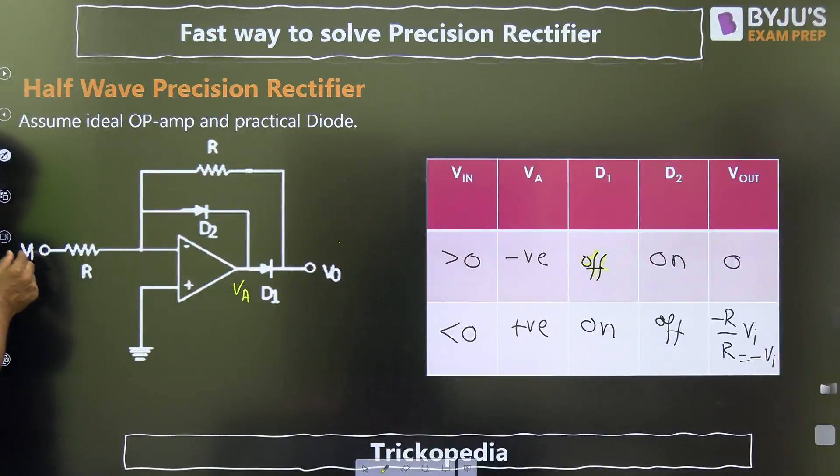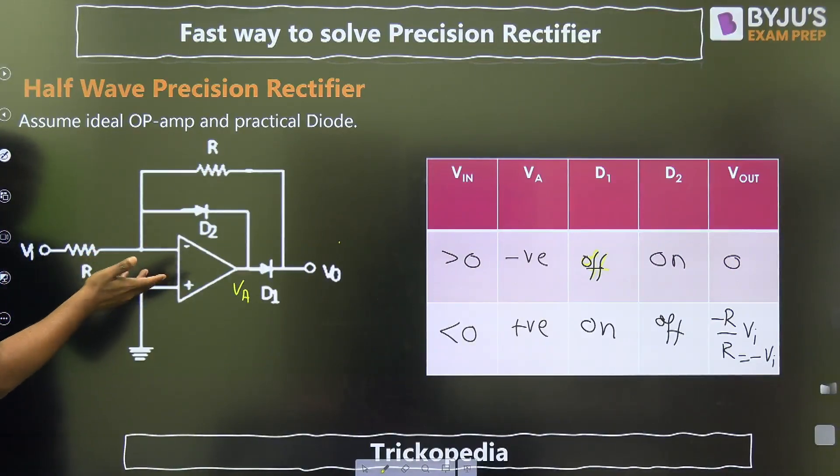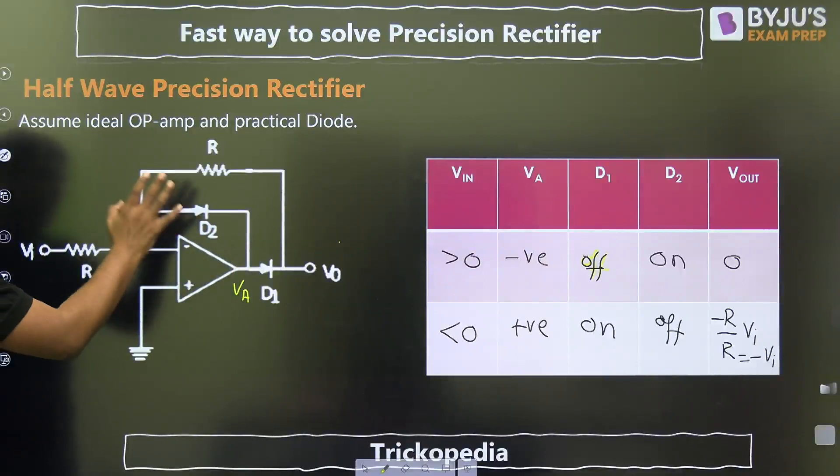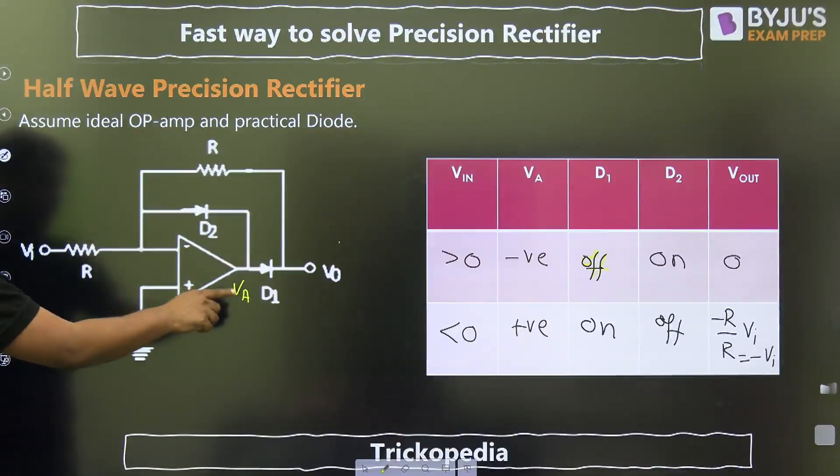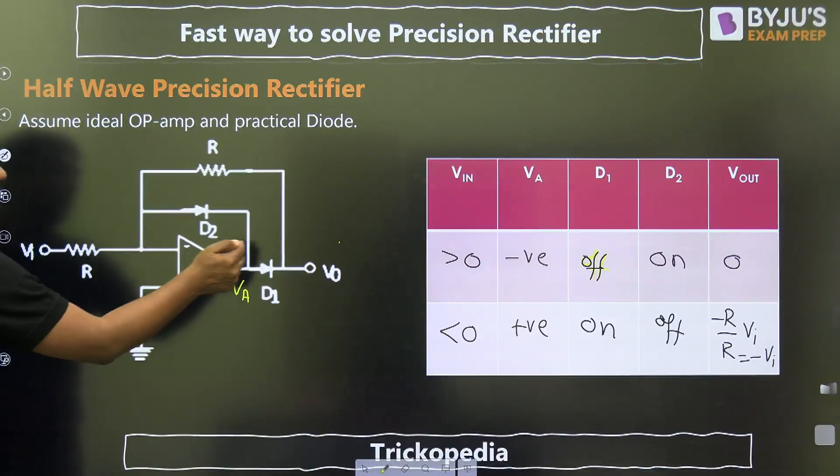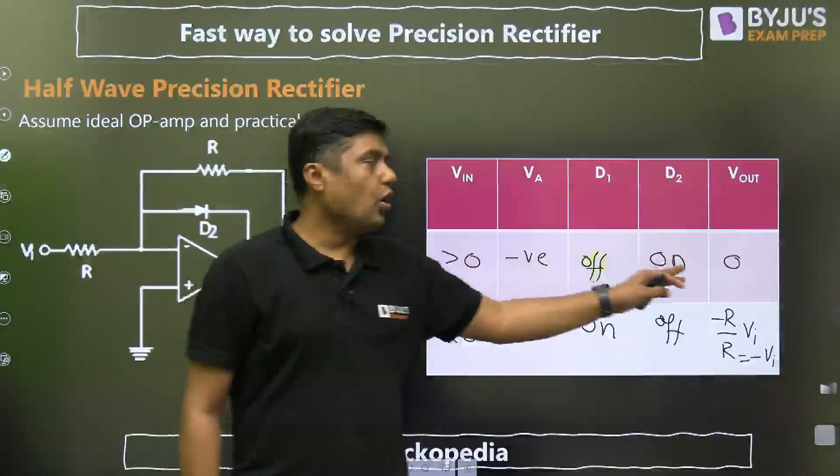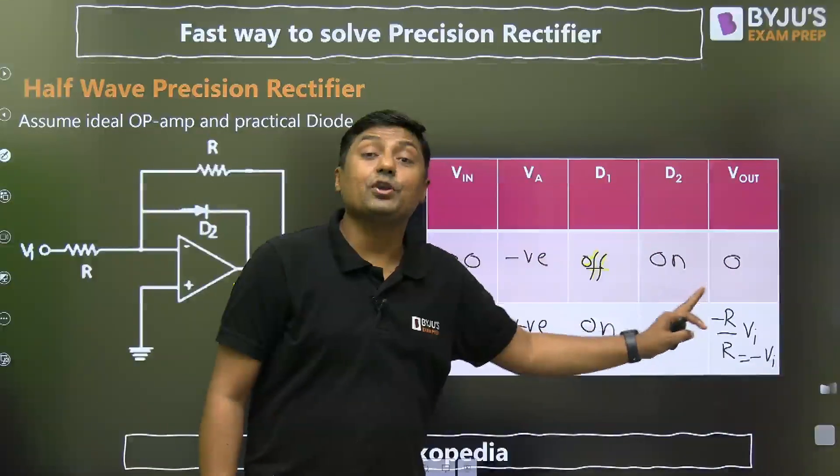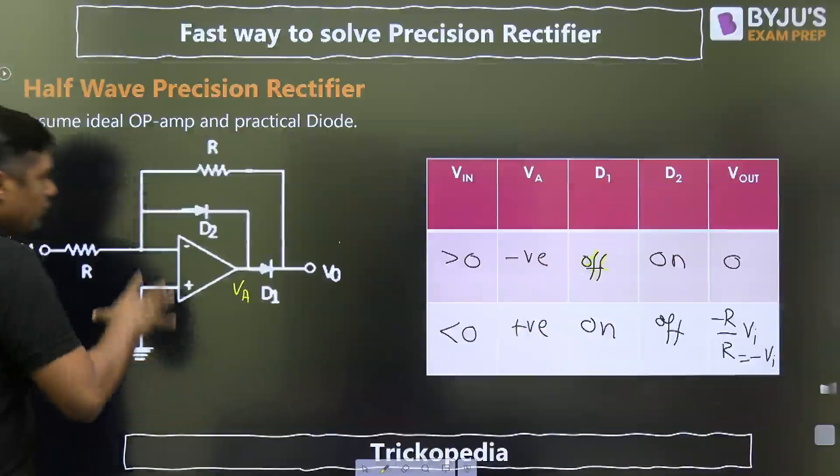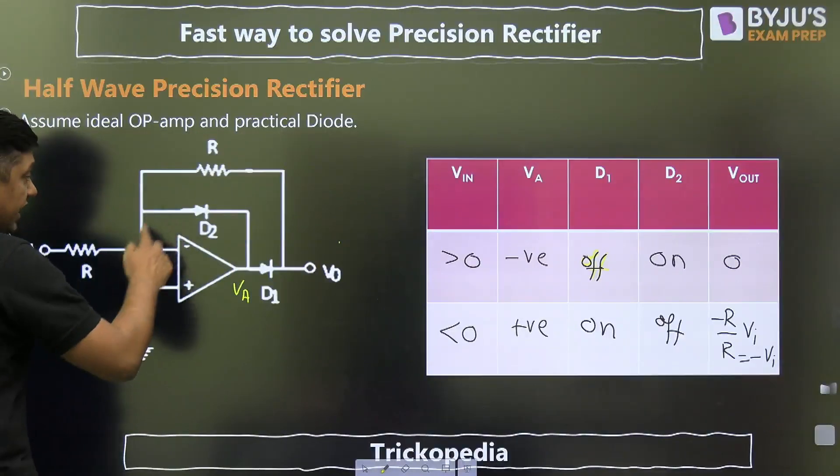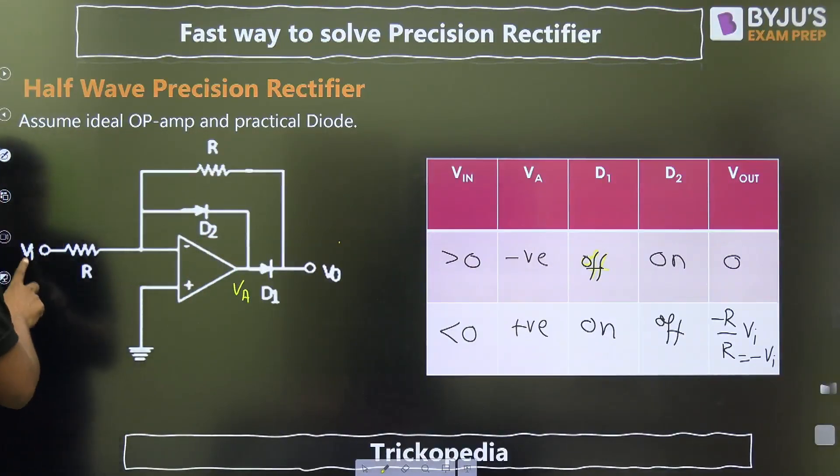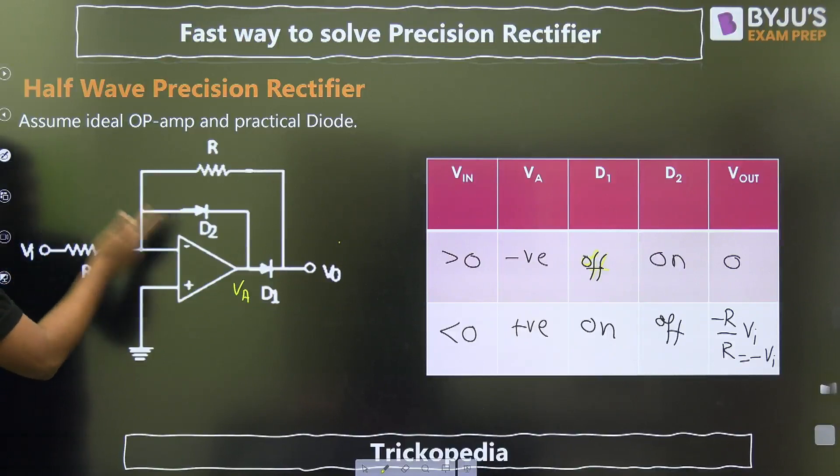When we are giving the positive voltage at this point, that is greater than 0, both the diodes are practical diodes. Op-amp is ideal. VA becomes negative. D1 off, D2 on. And we are getting output 0. And operational amplifier will not go into saturation because there is negative feedback through D2. When V in is positive, that is the case.